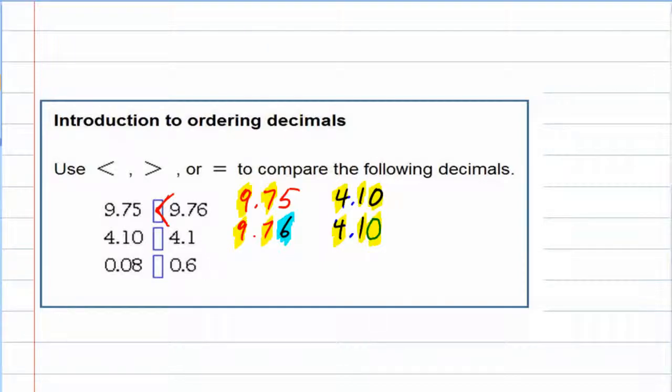So we've got the exact same digit for each one of the place values. So for this one, we're going to say that these two are equal.